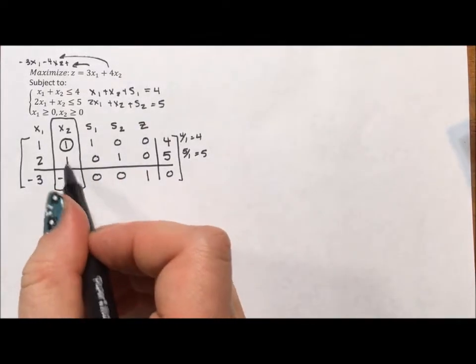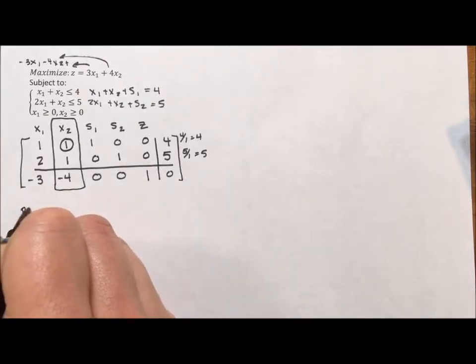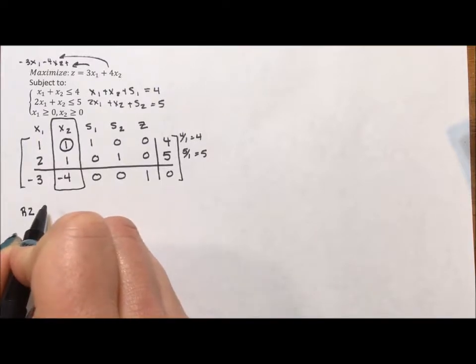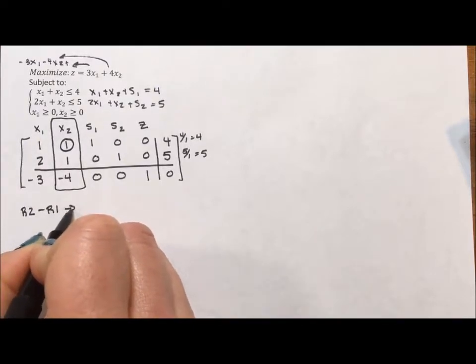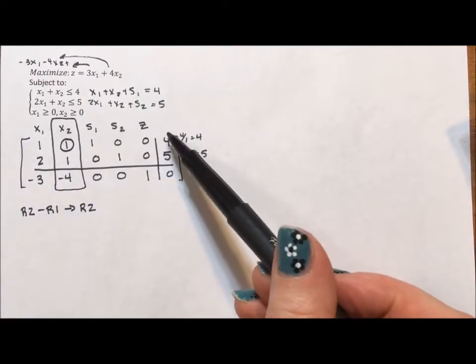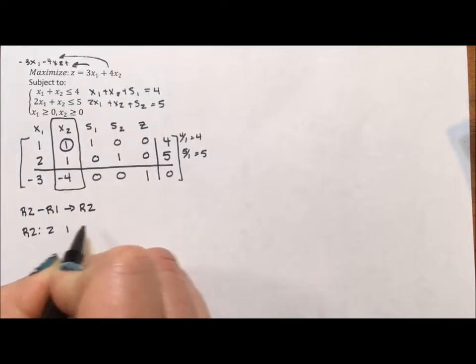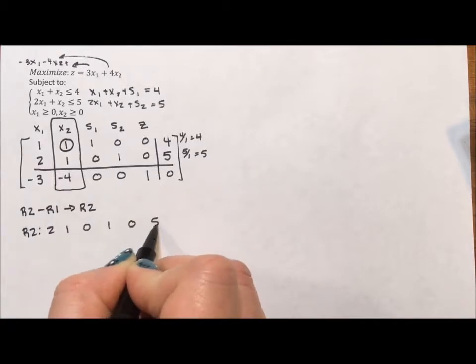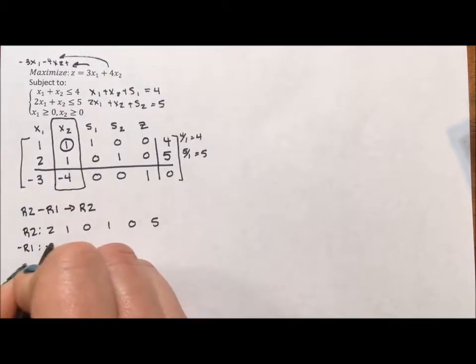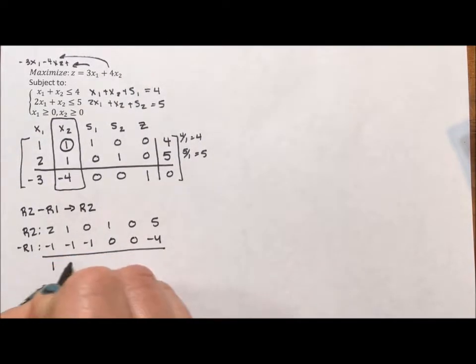So we're going to use this 1 to zero out the next two rows. So what I'm going to do is I'm going to take row 2 and subtract row 1, and that's going to replace my row 2. The reason I'm doing 2 minus 1 is because 2 minus 1 is 0, 5 minus 4 is 1. Sorry, 2 minus 1 is 1. I'll have more positives. So if I have row 2, that's 2, 1, 0, 1, 0, 5. Minus row 1 is negative 1, negative 1, negative 1, 0, 0, negative 4. So we get a 1, 0, negative 1, 1, 0, 1.